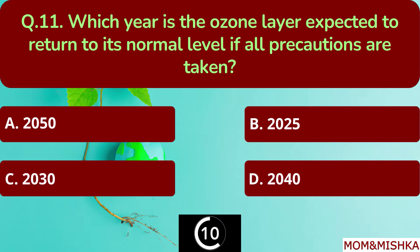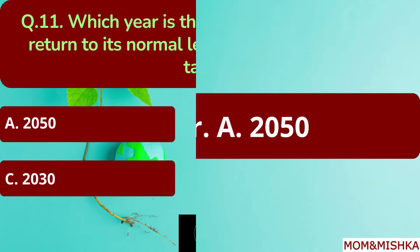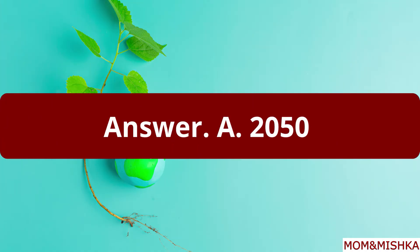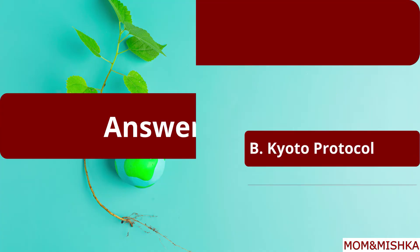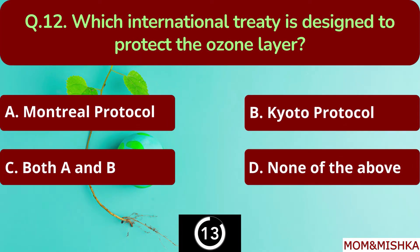Which year is the ozone layer expected to return to its normal level if all precautions are taken? Year 2050. Option A. Which international treaty is designed to protect the ozone layer?